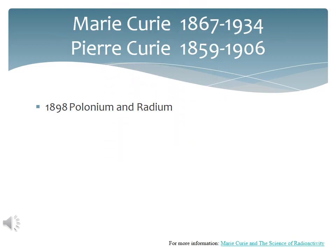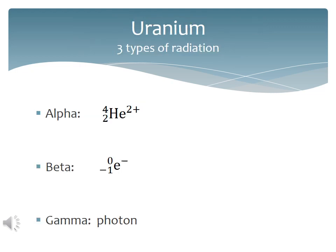The Curies extended Becquerel's work by discovering two new elements that were radioactive, polonium and radium. Further investigation of uranium showed that in addition to the gamma radiation, which is electromagnetic radiation, there were also two other types of radiation. Small positively charged particles, later shown to be the helium nucleus, the alpha particle, and small negative particles, later shown to be the electron, beta radiation.